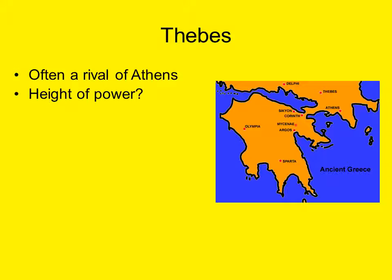Thebes had an important role in Greek mythology — it was the site of the stories of Oedipus and Dionysius, who was the son of Zeus and the god of drink. The Thebans sided with the Persians during the 480 BCE invasion by Xerxes. At one point during the Macedonian conquest, it was the most powerful city-state, and it ruled over the Boeotian plain — an important agricultural region. Control of the Boeotian plain meant control over a great deal of agriculture in the region.